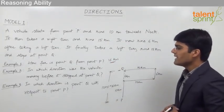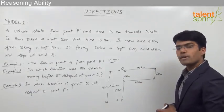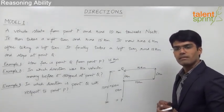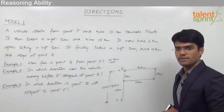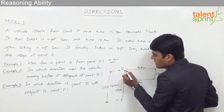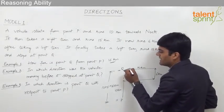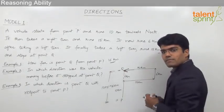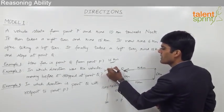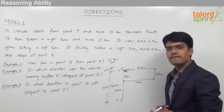The next question is in which direction was the vehicle moving before it stopped at point Q? Very clearly, before stopping at point Q the vehicle was moving in the westward direction. So the answer for the second question is west.